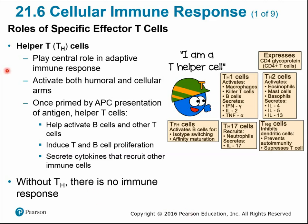Helper T cells are probably the most important T cells because they activate aspects of both the humoral and cellular branches. They can activate B cells and T cells, induce proliferation, and secrete cytokines to recruit other immune cells. Without helper T cells there would be no immune response — all other immune cells rely on them for activation. APCs must present antigens to the helper T for activation. There are different classes of helper T cells with varying specific functions.